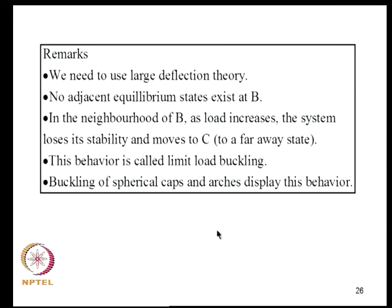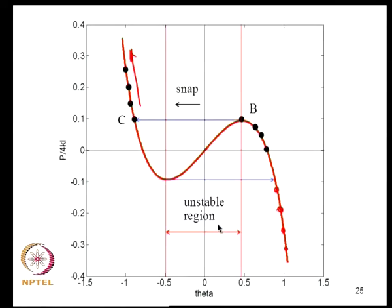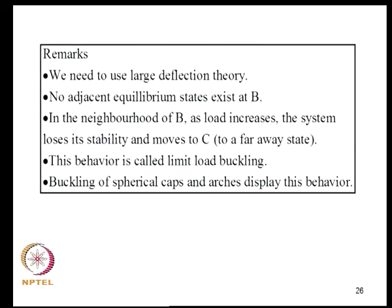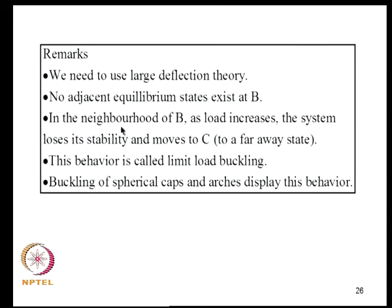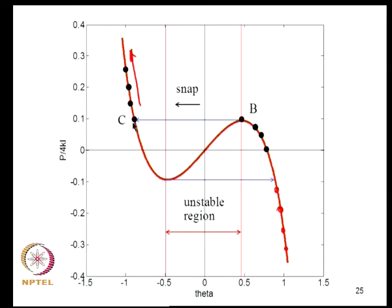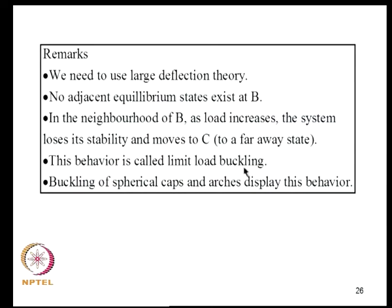Some observations: to study this problem we need large-deflection theory; linearization will not capture these details. At B no adjacent equilibrium positions exist, so the system moves to C — a faraway state. On unloading, the structure traces a stable path until it snaps back upward. The unstable region is never occupied in either forward or reverse loading. This is the snap-through phenomenon — analogous to an umbrella inverting under wind.